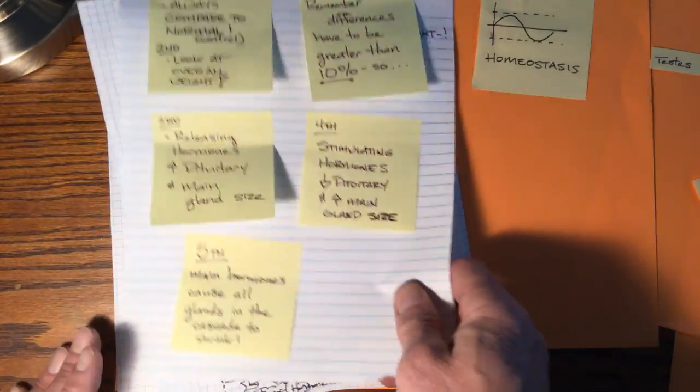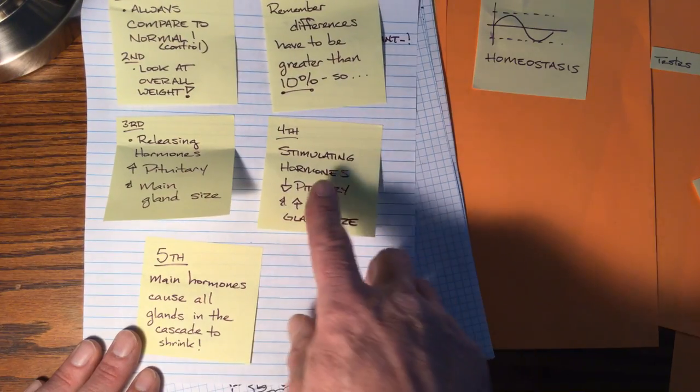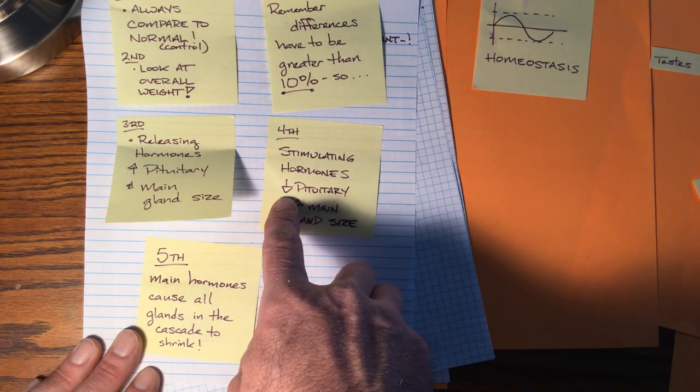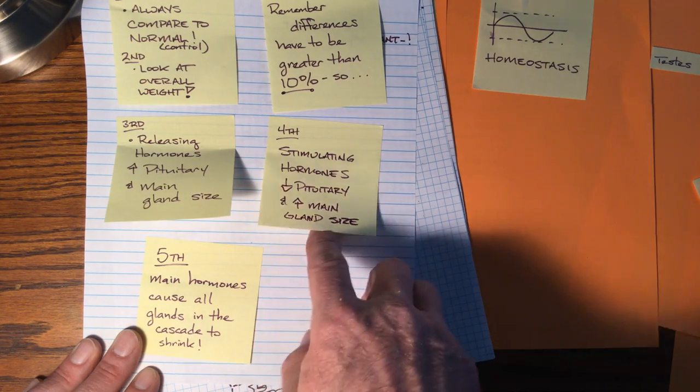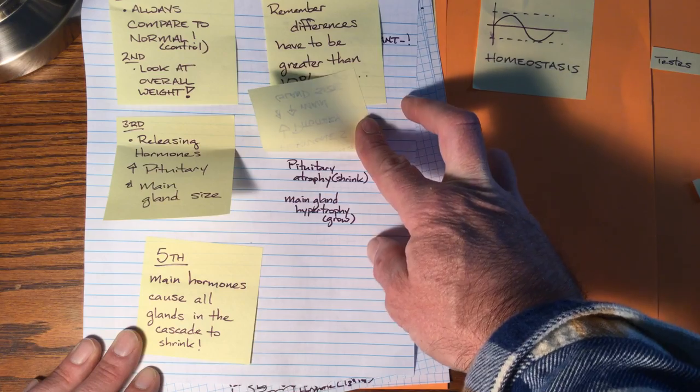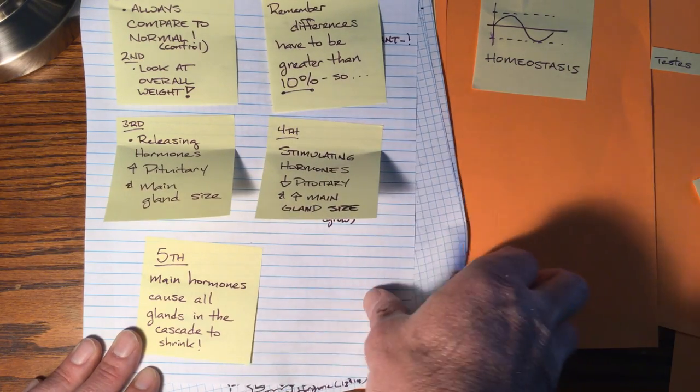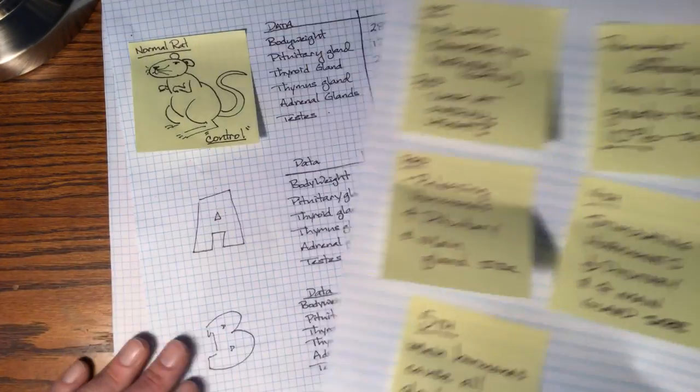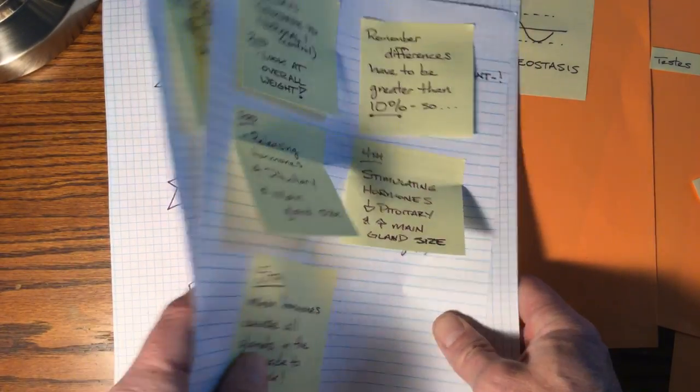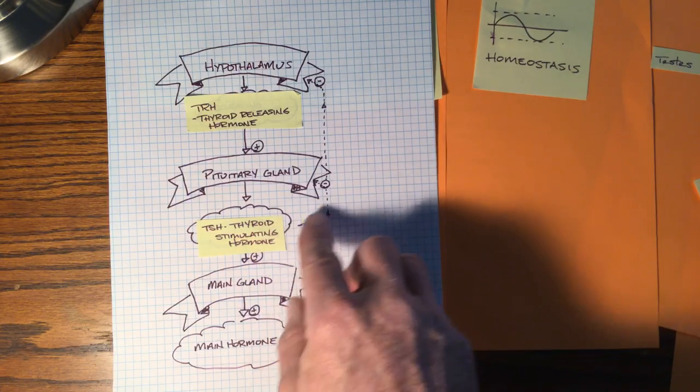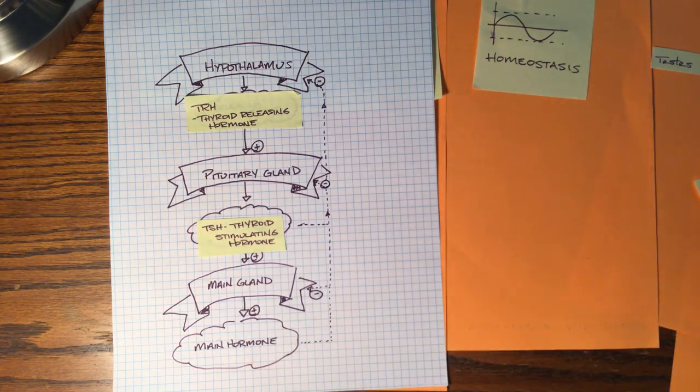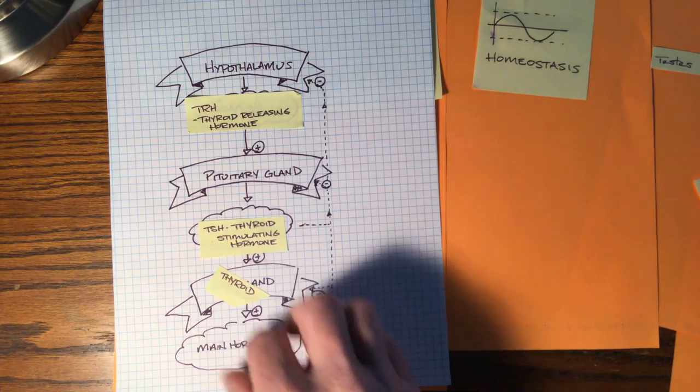Fourth thing. If that didn't happen, stimulating hormones will basically cause the pituitary to shrink and the main gland to increase in size. So it causes pituitary atrophy and main gland hypertrophy. Meaning that if we gave a rat TSH, TSH will feed back and shrink the pituitary, but it will grow the thyroid gland. It will make it grow.